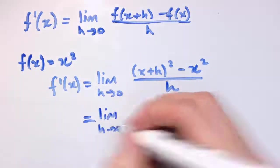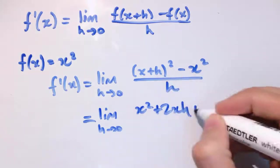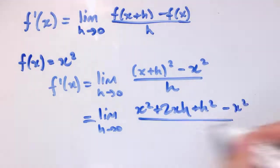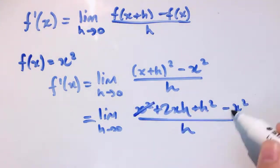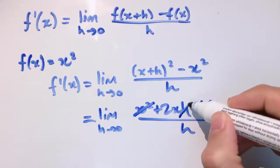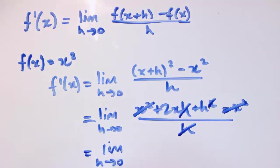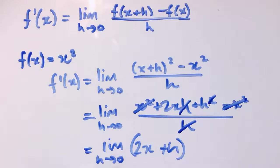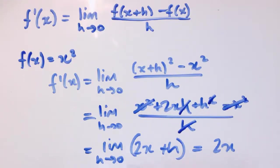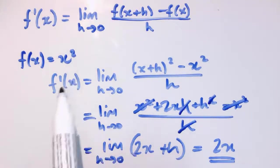If we multiply out the brackets, we get x² + 2xh + h², and I've still got the minus x², all divided by h. We see that x² and minus x² cancel out, leaving 2xh + h². Cancelling a factor of h top and bottom, we're left with the limit as h tends to 0 of 2x + h. As h tends to 0, 2x + h gets closer and closer to 2x, so in the limit this equals 2x. That proves from first principles that the derivative of x² is 2x.